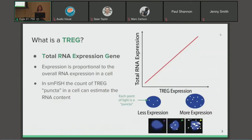A TREG is a gene whose expression is proportional to the overall RNA expression in a cell across different cell types. In smFISH, we're able to quantify the expression of one gene by counting up the puncta, or points of light, that we can observe in the image. We can then use that to estimate the expression of that gene and the RNA content of the cell.